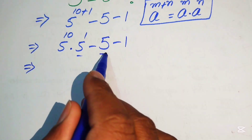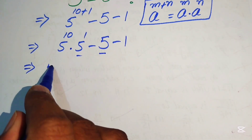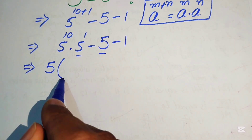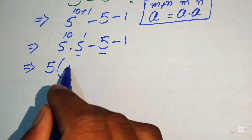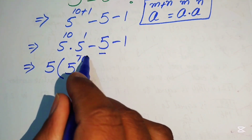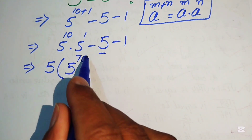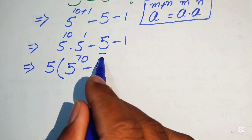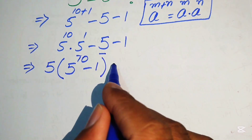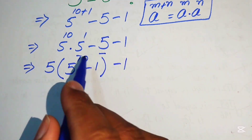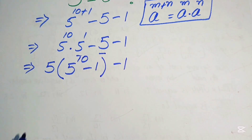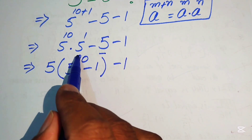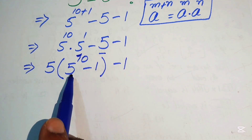We can see that 5 is a common factor, so we factor out 5. The remaining terms inside the brackets are 5 to the power of 10, minus 1, and minus 1.